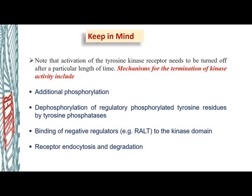When activation is done, deactivation needs to occur in normal cells as a normal process. Phosphorylation or dephosphorylation, or RALC-type negative regulators, act through endocytosis, degradation, or downregulation of receptors. All these processes lead to a mechanism in which cells stop proliferating — these are the normal cells. Cancer cells don't abide by these pathways, and that is why they go on proliferating.